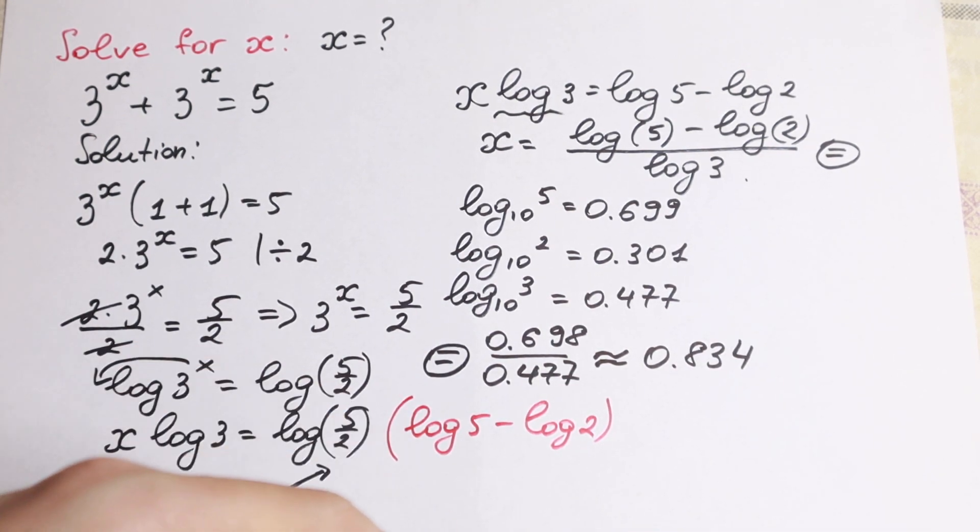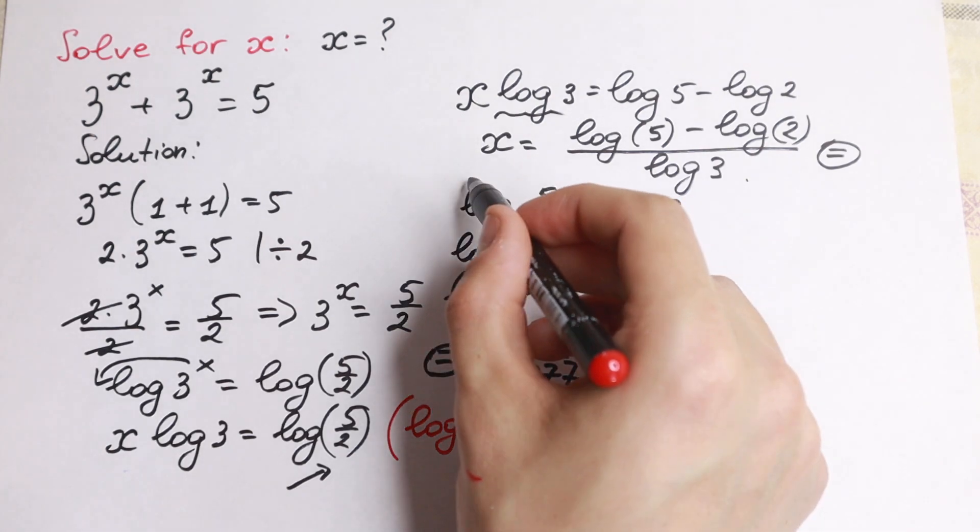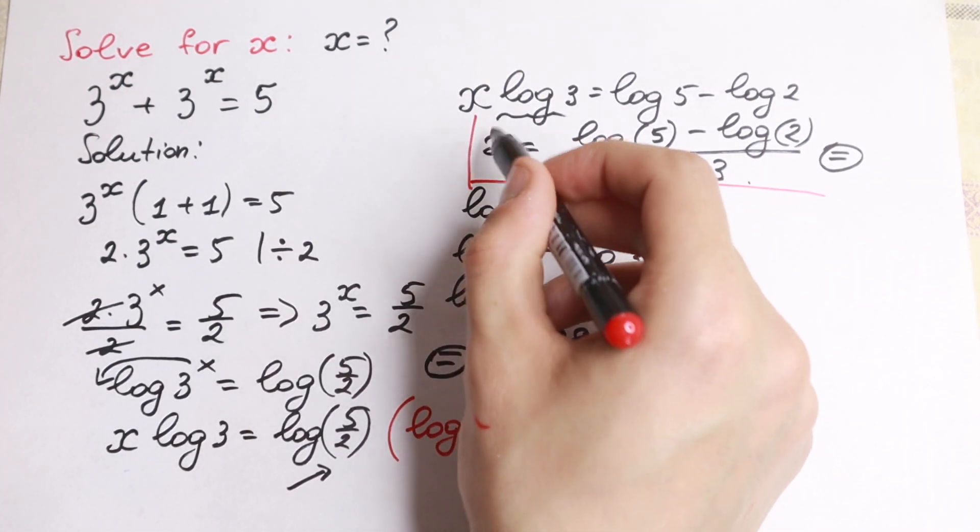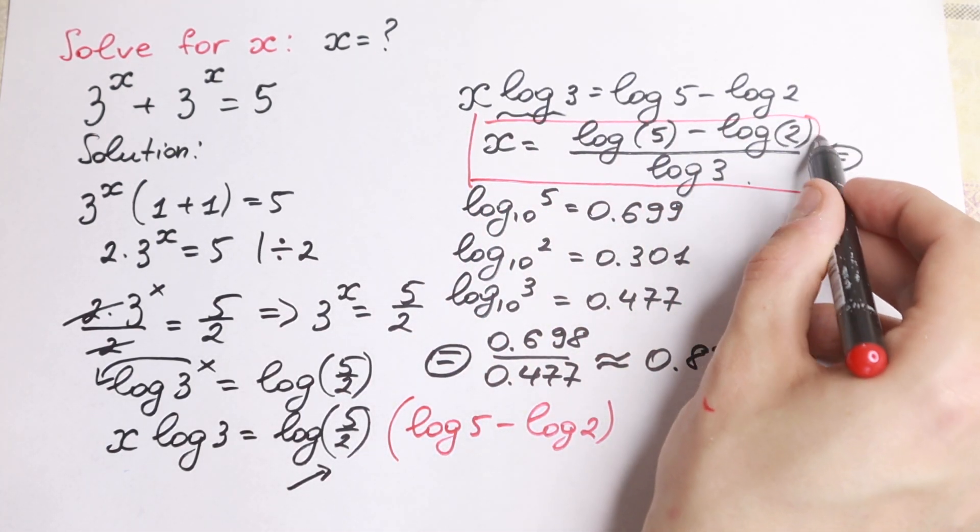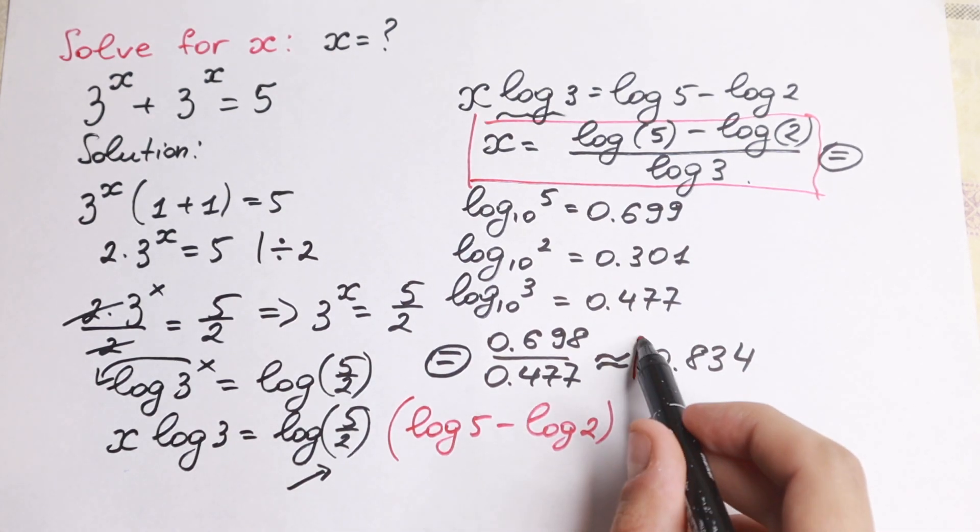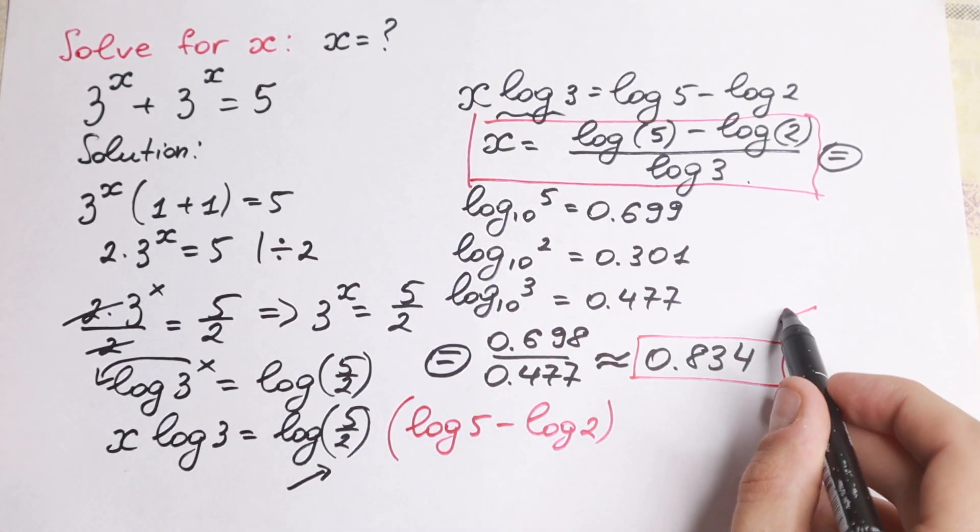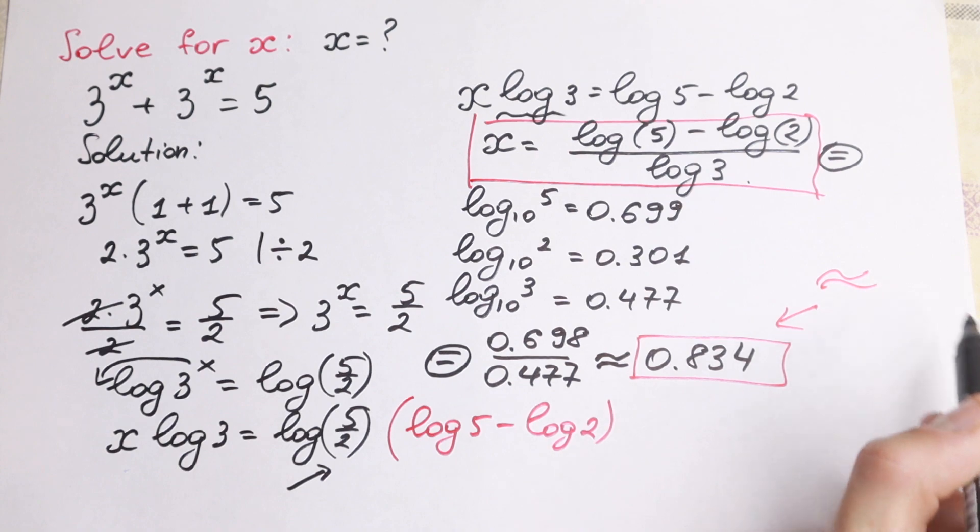And this is our approximate answer. This is our general answer: x equal to log 5 minus log 2 all over log 3. And this is our approximate answer to this interesting equation.